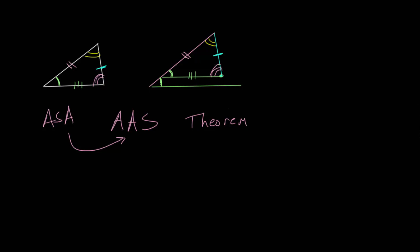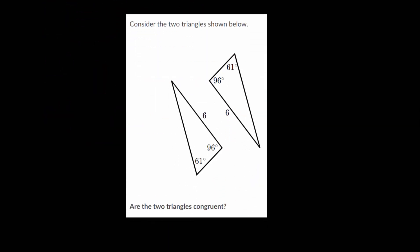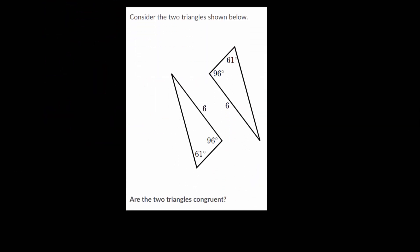With this knowledge, let's look at a specific example problem where we have two different triangles. If we can find they have two sets of equal angles and a side length that is not between the two equal angles, then by the angle-angle-side congruence theorem, we can prove these two triangles are the same size and the same shape, and are therefore congruent to each other.